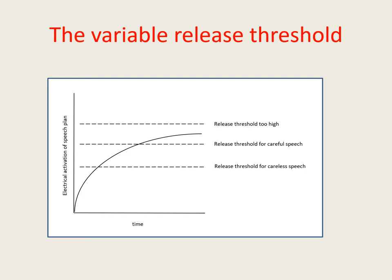In this graph, the curved line represents the level of electrical activation of a speech plan for a word — you can see how it rises over time up to a maximum and then levels out. The dotted lines represent three different possible settings of the release threshold. The level at which the release threshold is set varies from word to word depending on how much the speaker feels the need to say that word clearly and accurately. If the speech plan is not highly activated, there's a high likelihood it will contain errors that will become apparent when the speaker speaks it out loud.